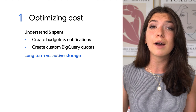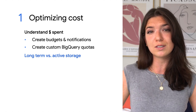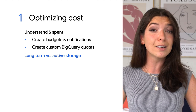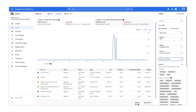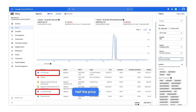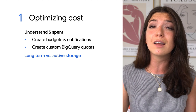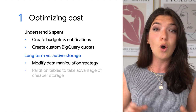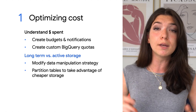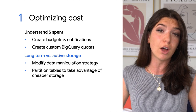Next, you might want to dig into the storage SKUs to look at a breakdown of active versus long-term storage. BigQuery charges half the price for data that has not been modified in 90 days. This includes entire tables or specific partitions within a table. So this information may help you modify the way you update data or narrow down tables that could be partitioned to take advantage of long-term storage.